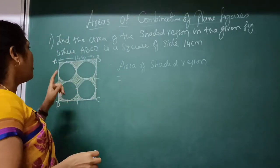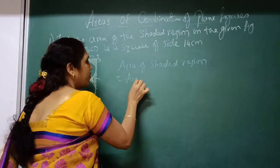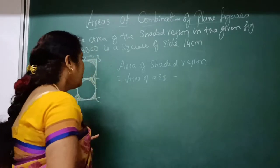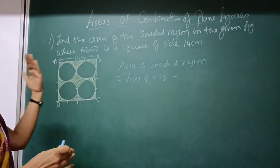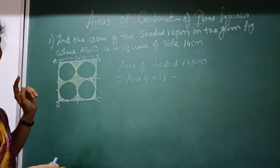See here, area of shaded region is equal to—in the given figure what they have given? They have given you a square. So I will find the area of a square minus, see in the square, if I am going to remove these 4 circles, the remaining part is the shaded part.